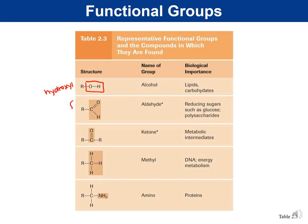A carbonyl group is a carbon double-bonded to an oxygen (C=O). If that carbonyl is at the end of a molecule, it's called an aldehyde — remember: aldehyde starts with a vowel, end starts with a vowel. If the C=O is in the middle of the carbon skeleton, it's called a ketone — K and M: ketones are in the middle. Carbonyl groups are found in sugars like glucose and fructose.